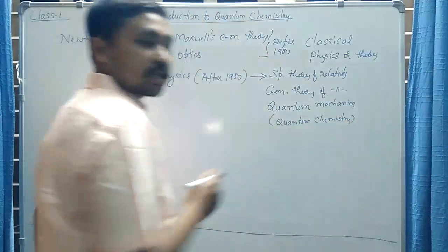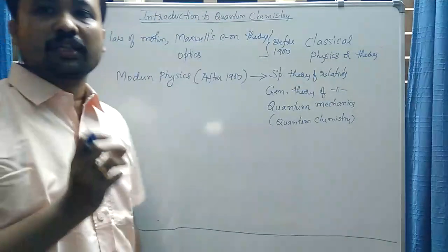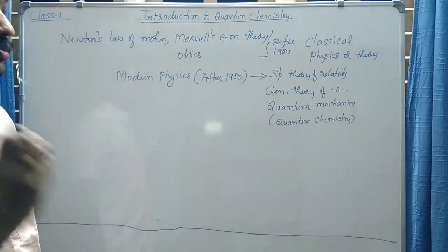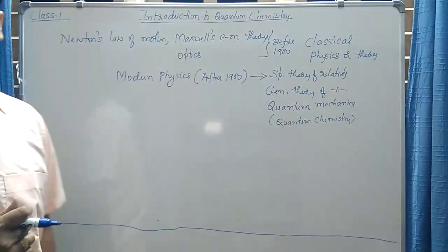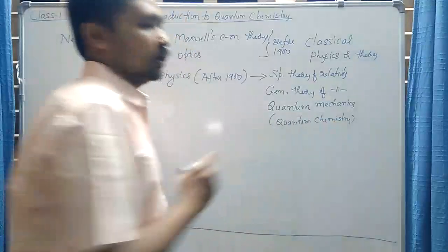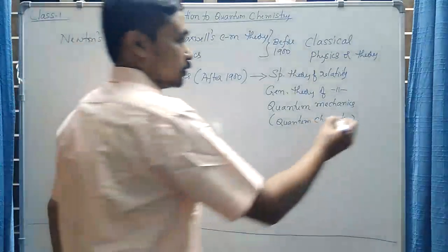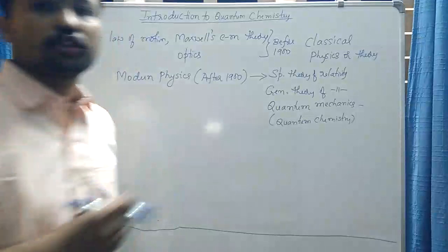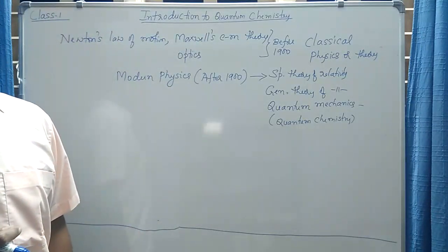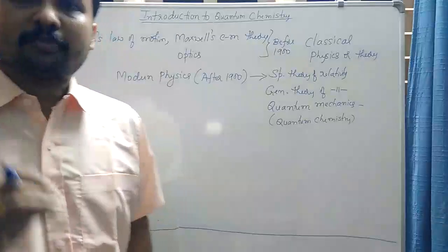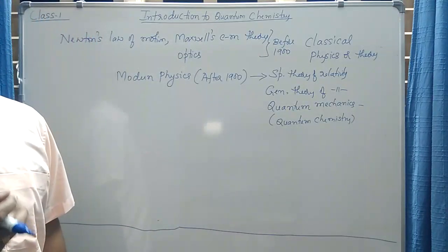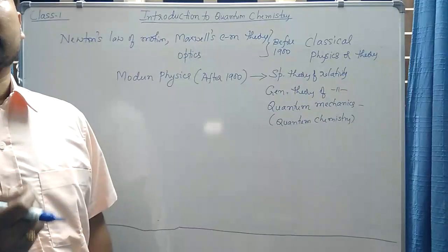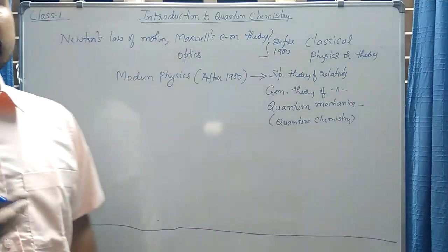The application of quantum mechanics to chemistry problems is called quantum chemistry — so we as chemists call it quantum chemistry. Who developed quantum mechanics? It is not the contribution of a single person. Quantum mechanics was initially formulated by Max Planck, who gave quantum theory, but this quantum mechanics — also called wave mechanics — was developed by several scientists.